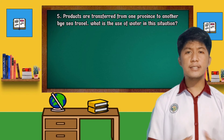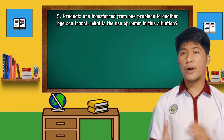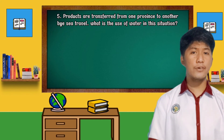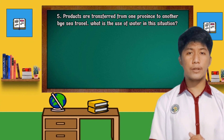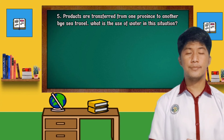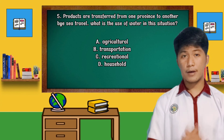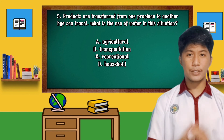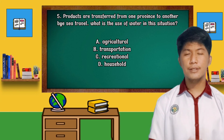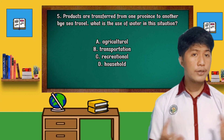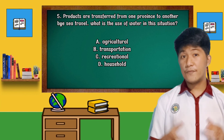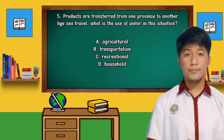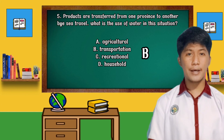And for the last question: products are transferred from one province to another by sea travel. What is the use of water in this situation? A. Agricultural, B. Transportation, C. Recreational, D. Household. If your answer is B, you are correct!